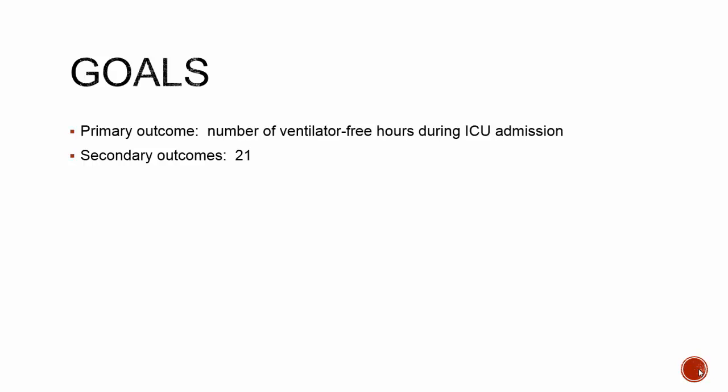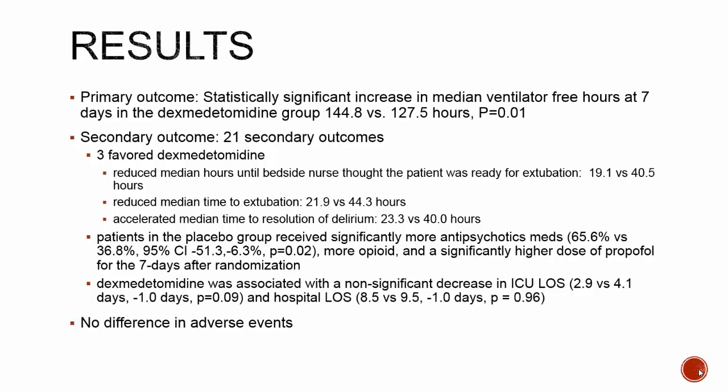The primary outcome was the number of ventilator-free hours during ICU admission. There were 21 secondary outcomes. For the primary outcome, there was a statistically significant increase in median ventilator-free hours at seven days in the Precedex group versus placebo: 144 hours (approximately six days) versus 127 hours (approximately five days).